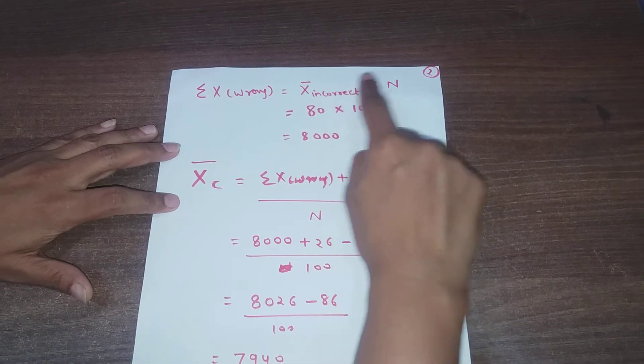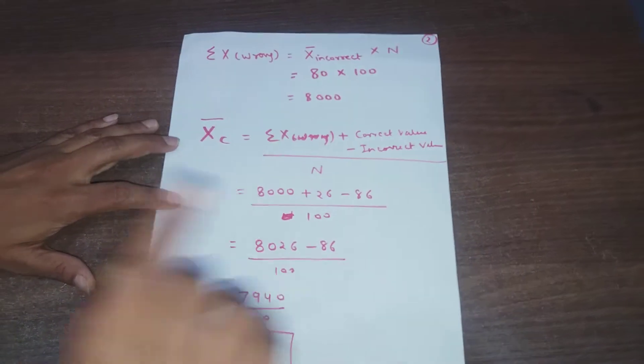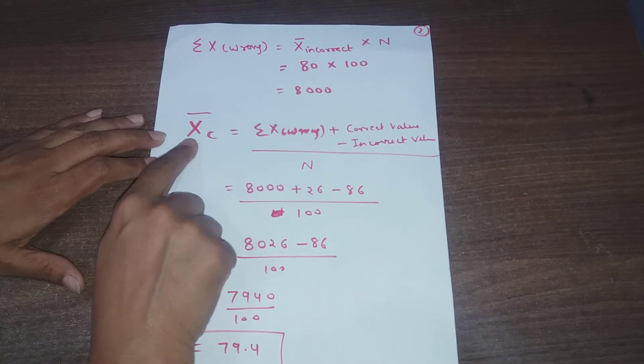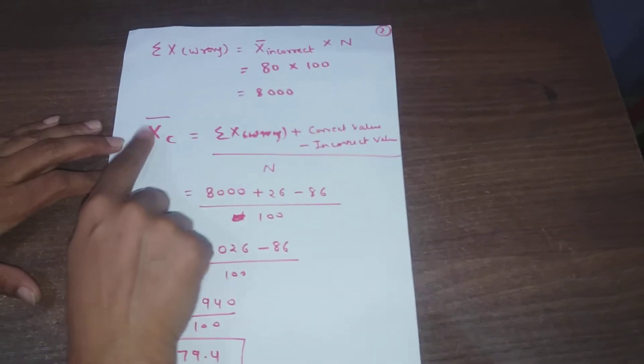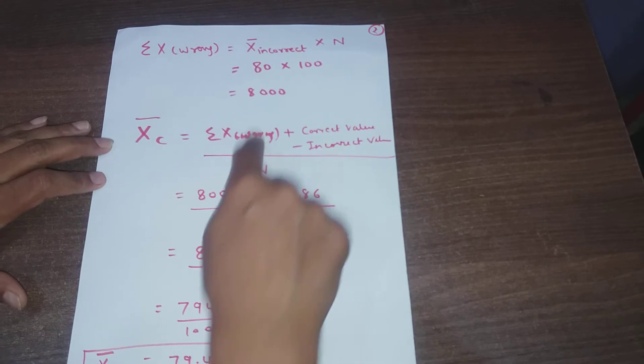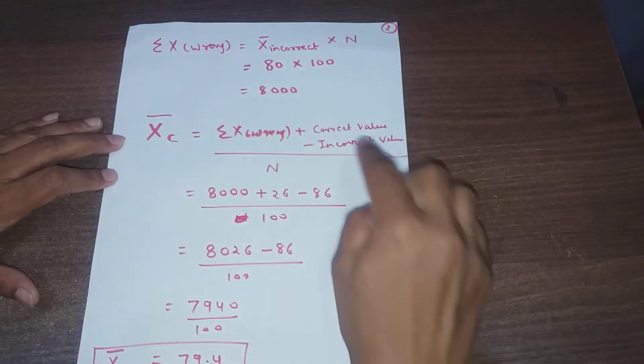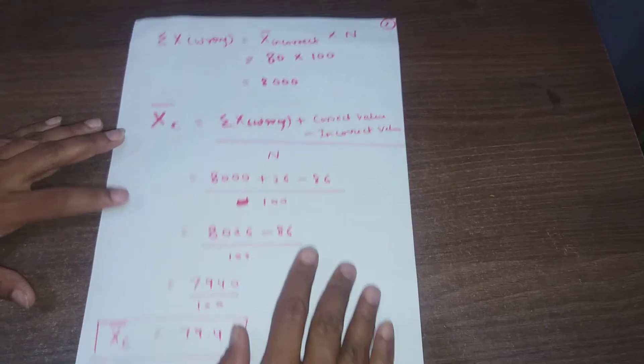Now to find correct arithmetic mean, what you will do? You will place summation of x wrong, which you have just now calculated, plus correct value minus incorrect value, all divided by n.